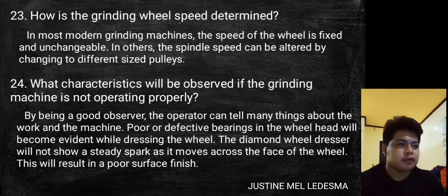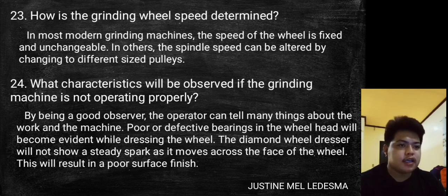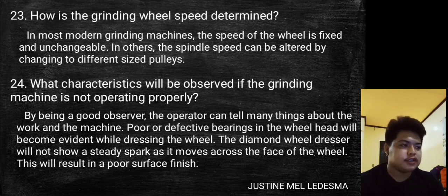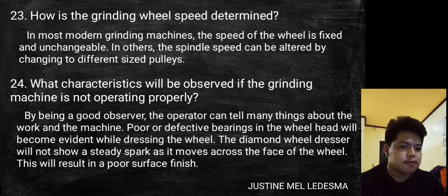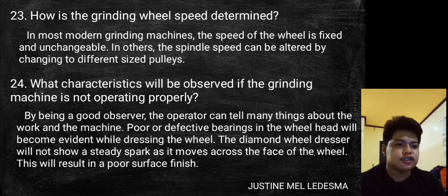What characteristics will be observed if the grinding machine is not operating properly? Being a good observer, the operator can tell many things about the work and the machine. Using poor or defective bearings in the wheel head will become evident while dressing the wheel. The diamond wheel dresser should show a steady spark as it moves across the face of the wheel.